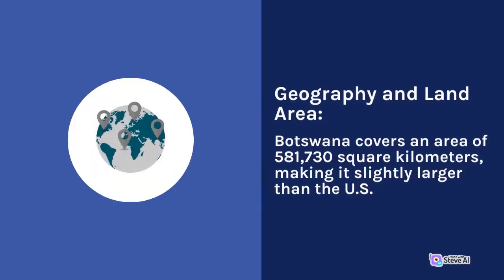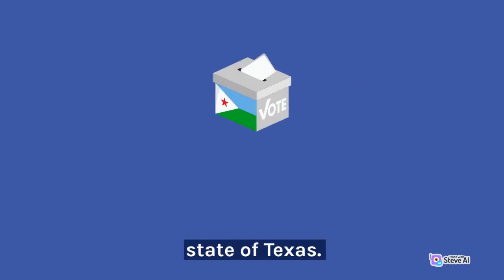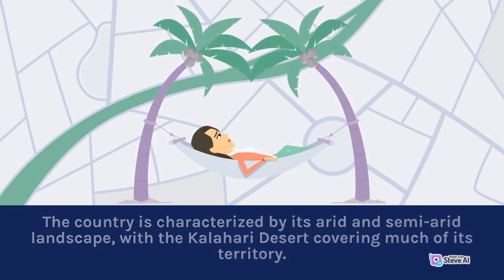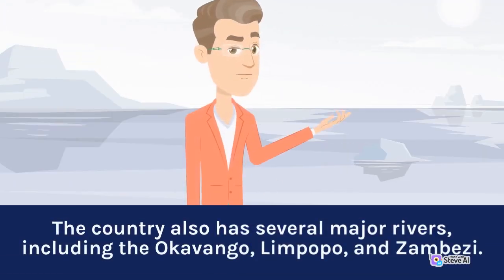Botswana covers an area of 581,730 square kilometers, making it slightly larger than the U.S. state of Texas. The country is characterized by its arid and semi-arid landscape, with the Kalahari Desert covering much of its territory. The country also has several major rivers, including the Okavango, Limpopo, and Zambezi.